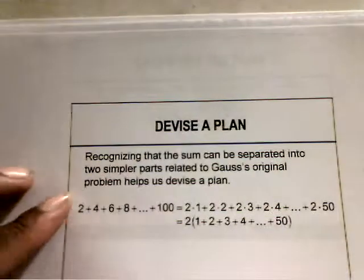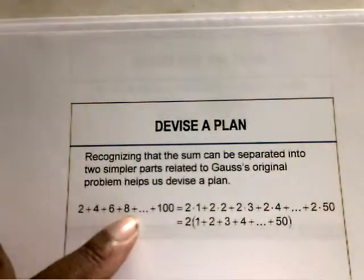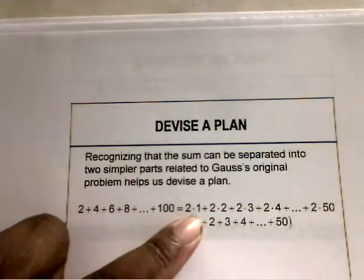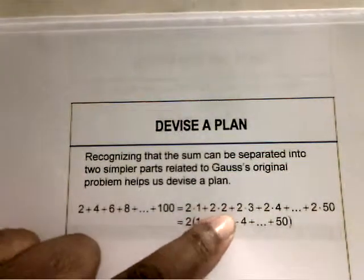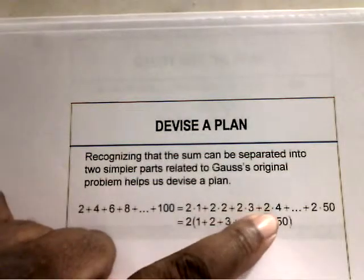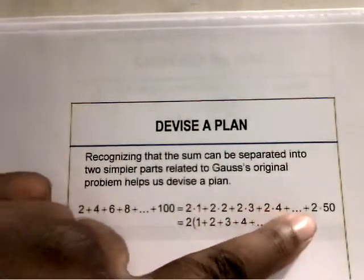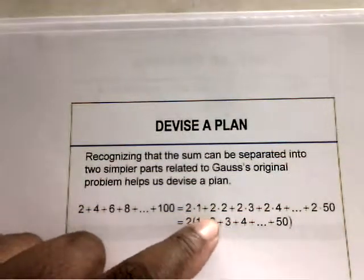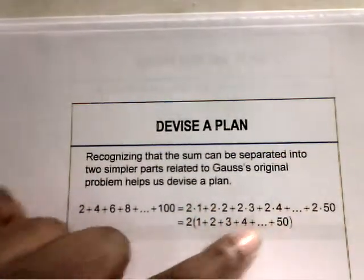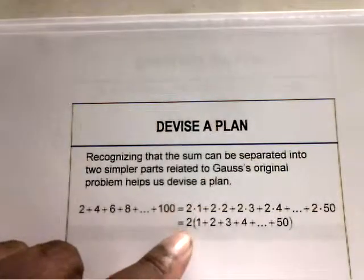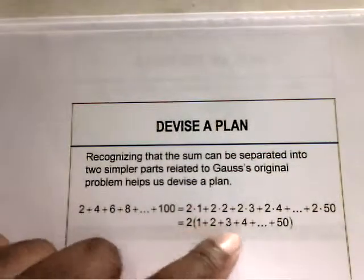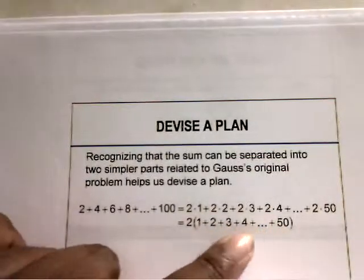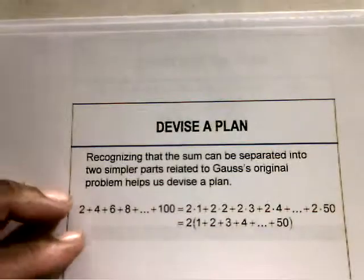So 2 plus 4 plus 6 plus 8 and so on up to 100 equals 2 times 1, plus 2 times 2, plus 2 times 3, plus 2 times 4, and so on up to 2 times 50. The common factor is 2, so the 2 comes outside, and then you have the sum from 1 to 50: 1 plus 2 plus 3 plus 4, all the way up to 50.